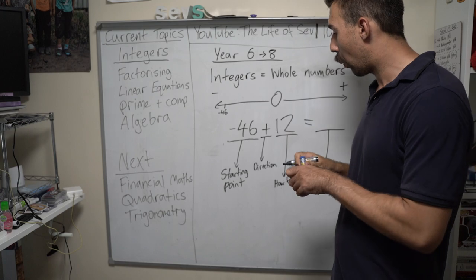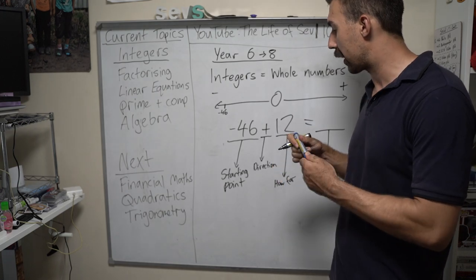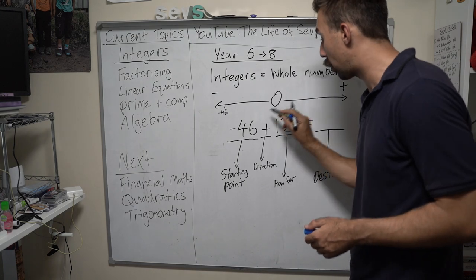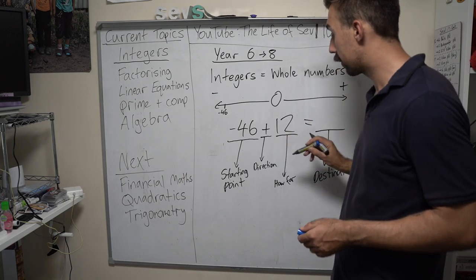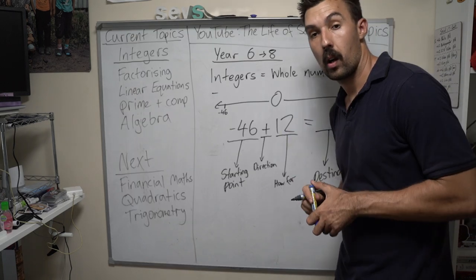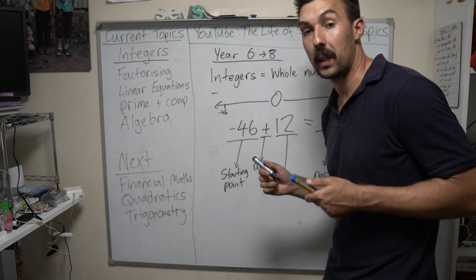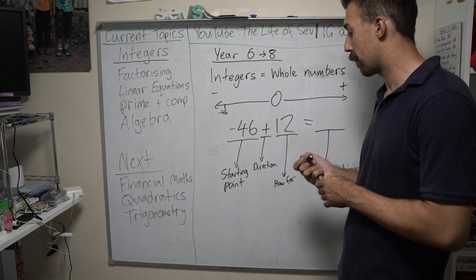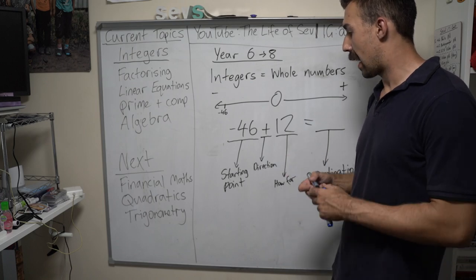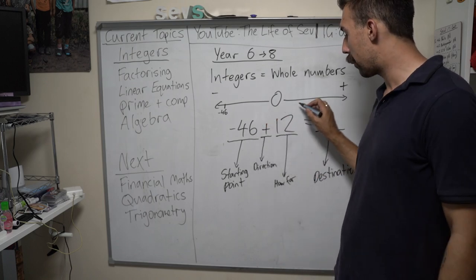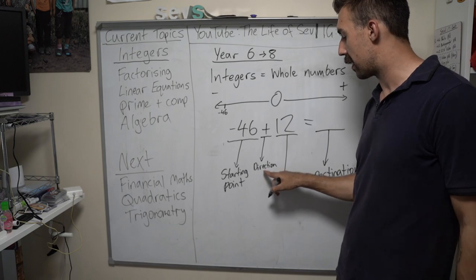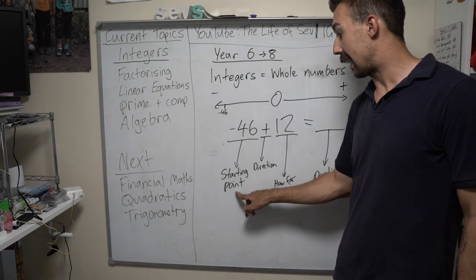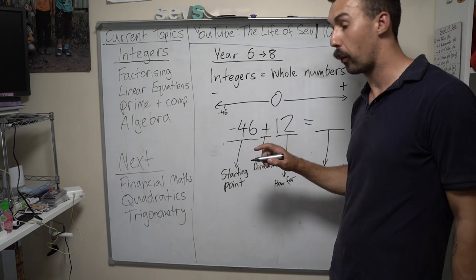Or we can look at it like this: we've got a negative 46 and a plus 12. So what's going to be the difference in total? We don't go to 12 as another starting point — it's how far we're going from negative 46.